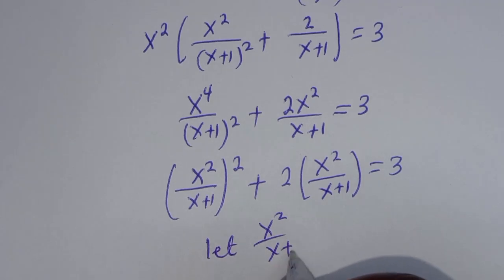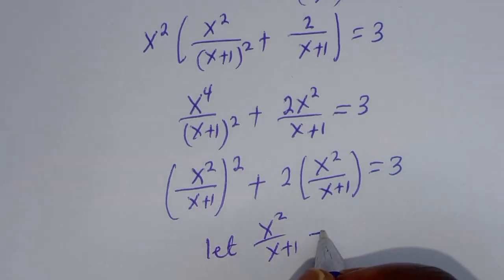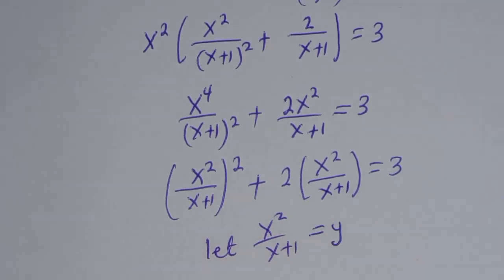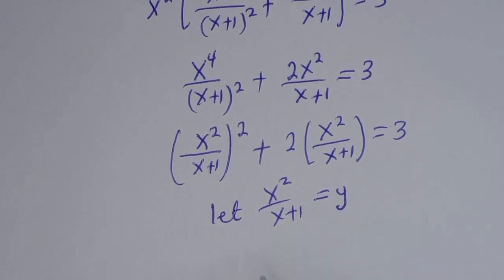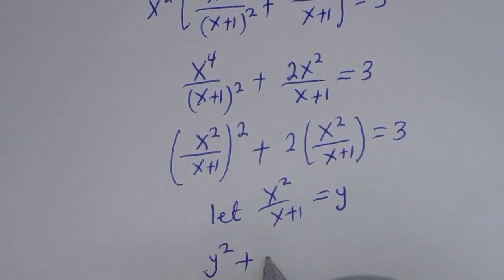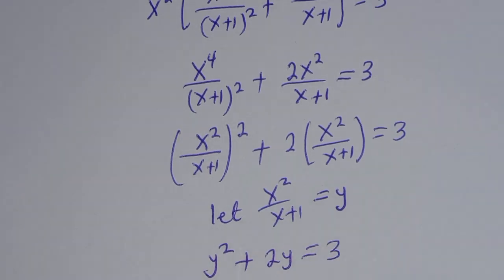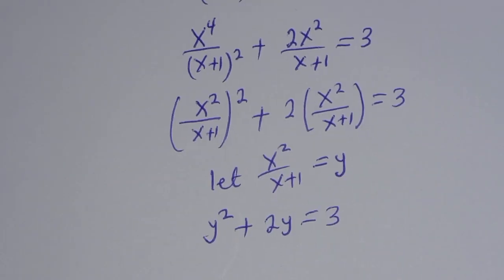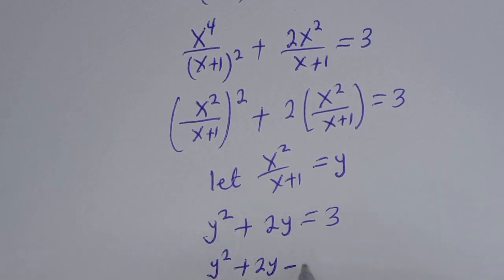Now let's multiply out by s squared. We get s to the power 4 over (s plus 1) all squared, plus 2s squared over (s plus 1), all equal to 3. This can be written as [s squared over (s plus 1)] all squared plus 2 times [s squared over (s plus 1)] equals 3. Now let y equal s squared over (s plus 1). Substituting, we have y squared plus 2y equals 3, which gives y squared plus 2y minus 3 equals zero.